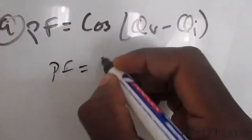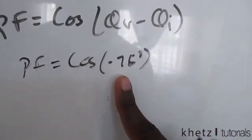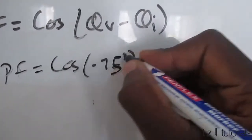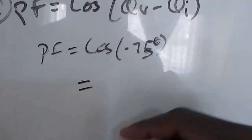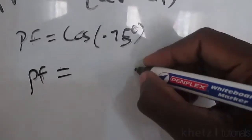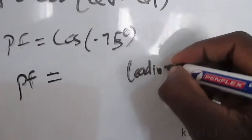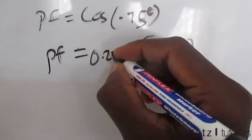Taking that, we're going to say cosine of negative 75. This is negative, which means this power factor is leading, meaning the angle associated with the current is greater. The value of the power factor is 0.2588.